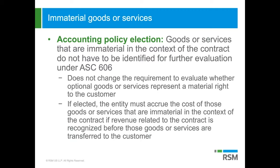If you do apply this election, you don't have to identify goods or services that are immaterial in the context of the contract, and you wouldn't have to evaluate the aggregate of all immaterial goods or services. The election doesn't change the requirement to evaluate whether the optional goods or services represent a material right to the customer, based on whether the option provides a material right that the customer wouldn't get without entering into the contract.